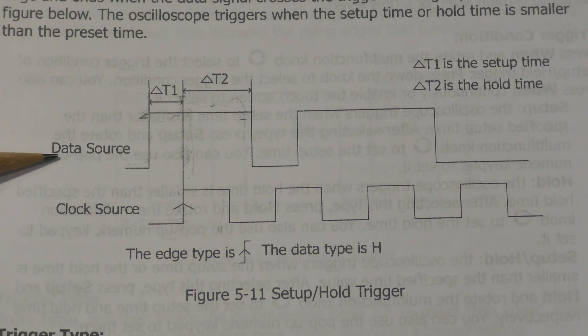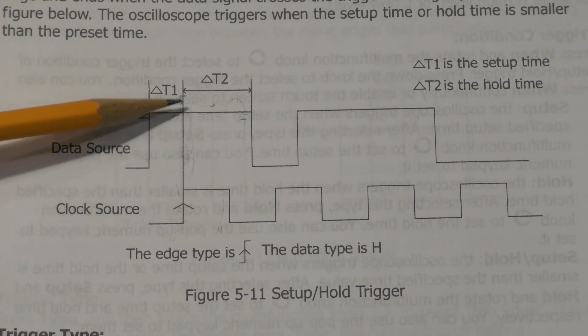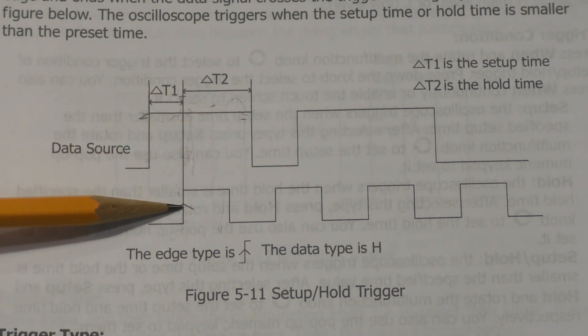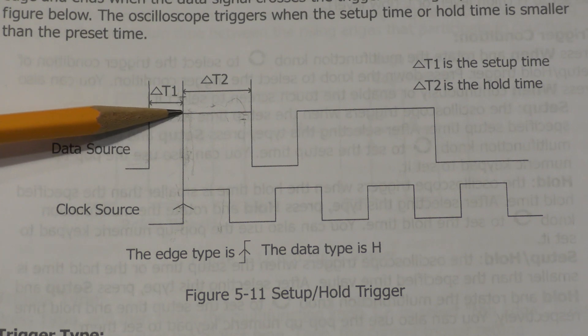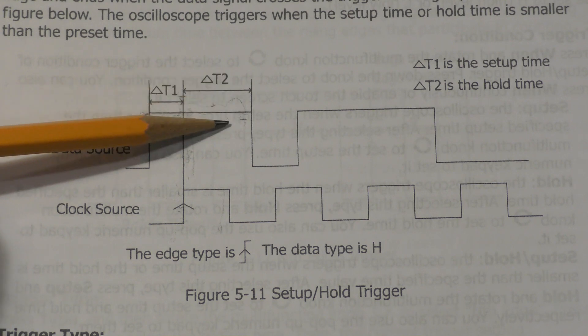You assume that you have a data source that goes to its desired value sometime before the clock edge, and then remains at the desired value for some time after the clock edge. The time before the clock edge is called the setup time. The time after the clock edge is called the hold time.